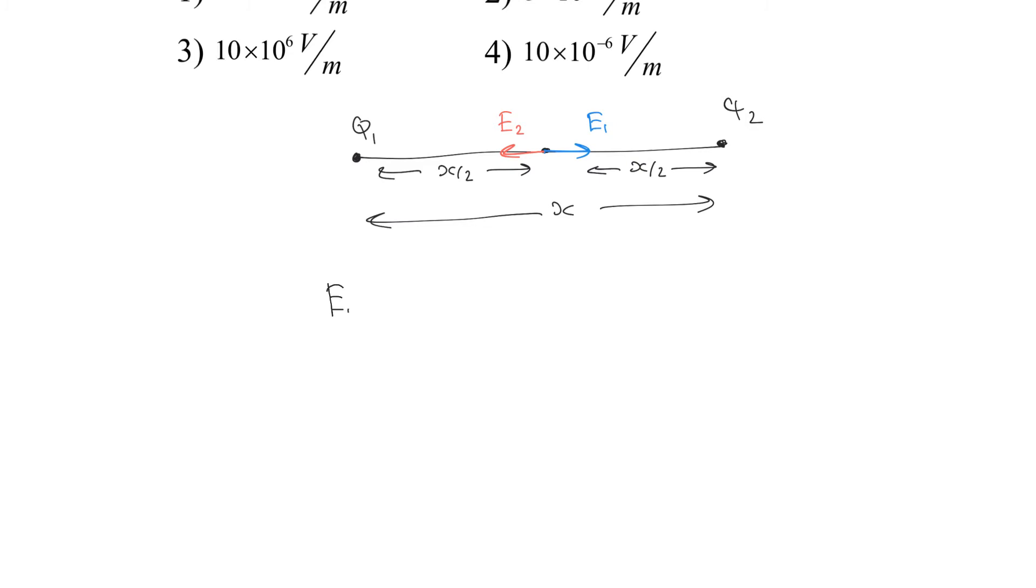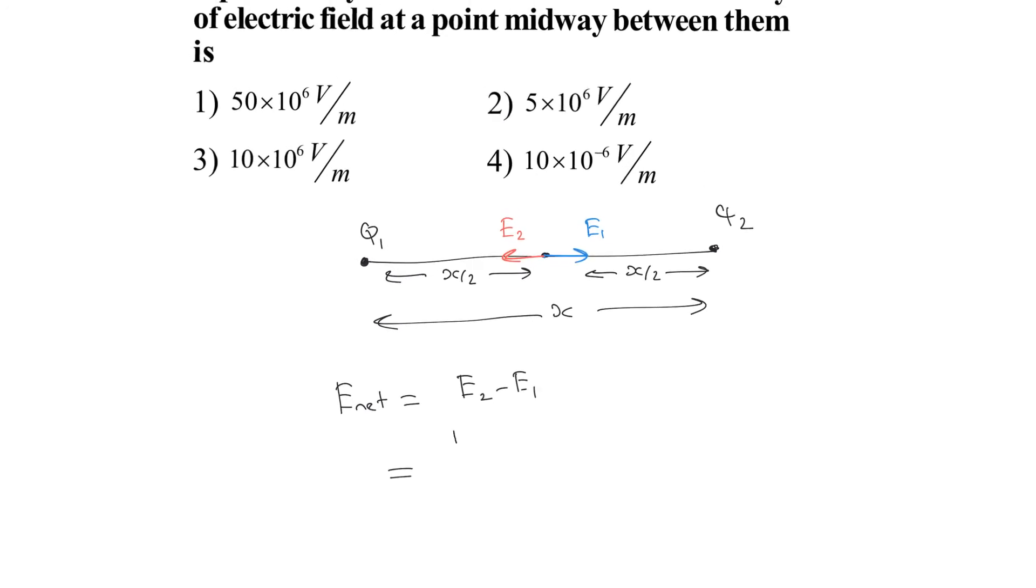We can find out the value of this net electric field, which is equal to E2 minus E1. The value of E2 we can take as K into...